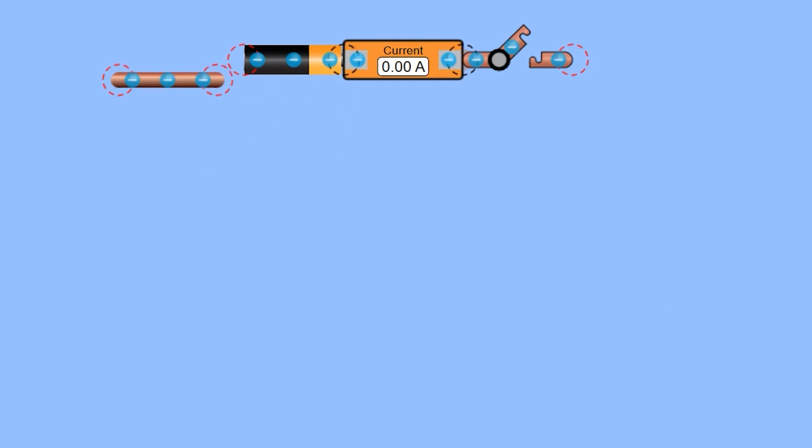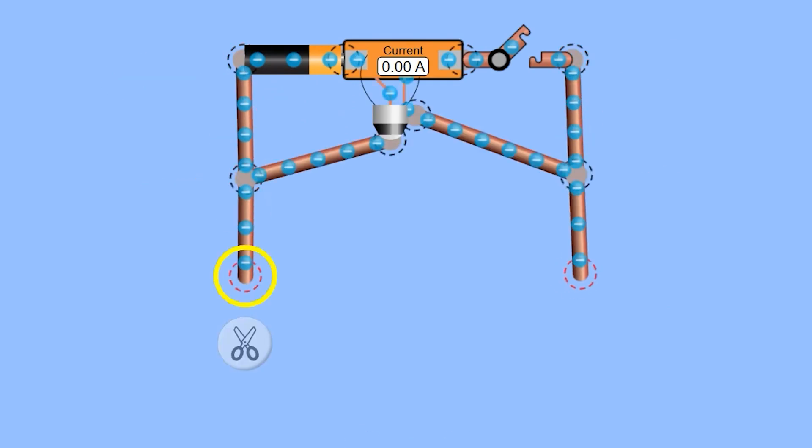In a parallel connection, components are linked side by side, creating multiple paths for the current.